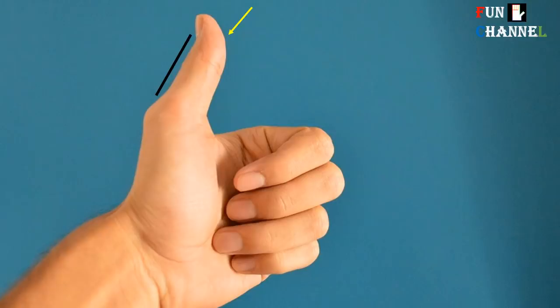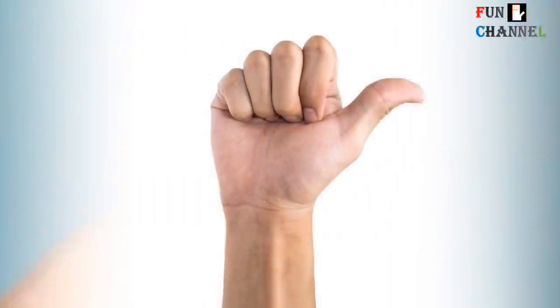If the thumb slightly bends backwards, either naturally or by applying pressure, it is known as a flexible thumb. People with flexible thumb are socially active and adaptable, who do not hold any firm opinions and are always open to new thoughts and ideas.